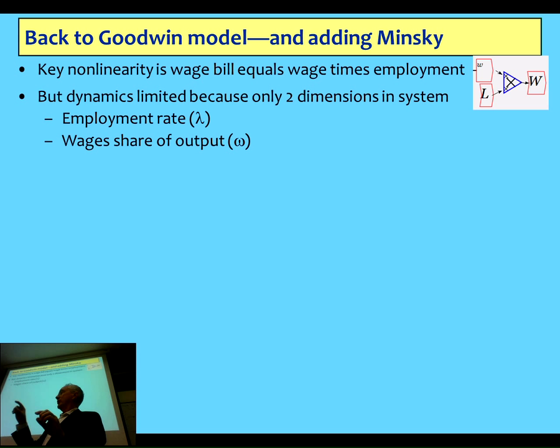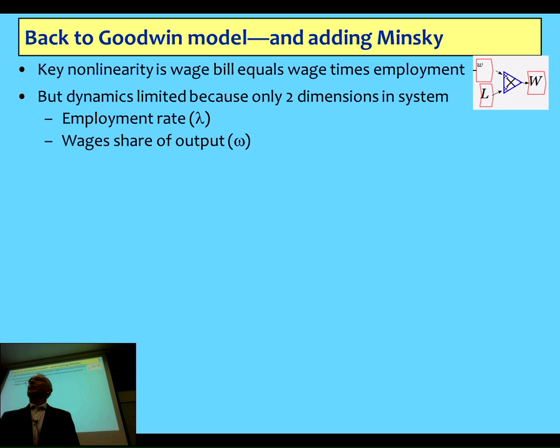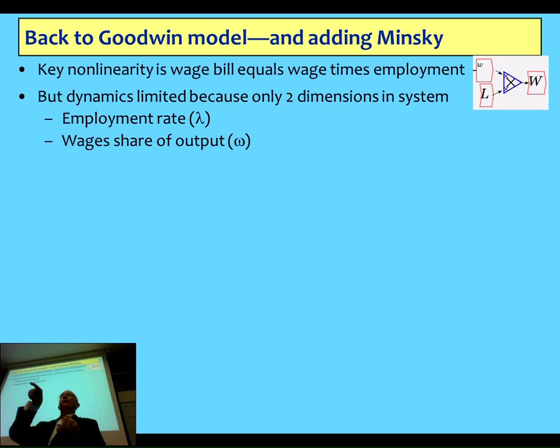Particular initial conditions give you a particular loop within that phase space. If I start right at the equilibrium, I simply stay at one point. If I'm 2% away, I'll cycle around 2% away. If I'm 7% away, I'll cycle 7% away. You can imagine drawing a graph with lambda on one axis and omega on the other, where no solution can intersect with any other solution.